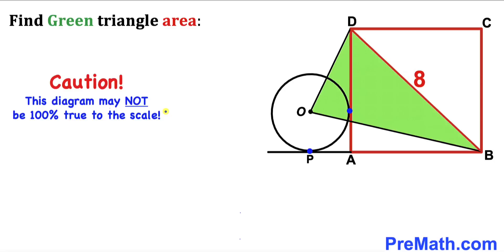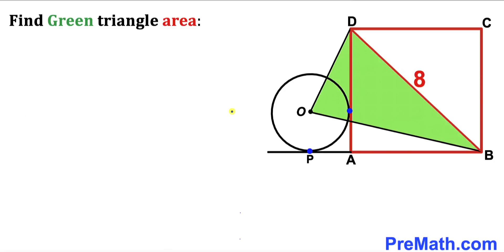Please keep in mind that this figure may not be 100% true to the scale. Let's go ahead and get started. Here's our very first step: let's focus on this square ABCD whose diagonal is 8, and now we are going to find its side length.